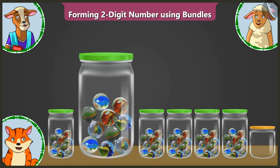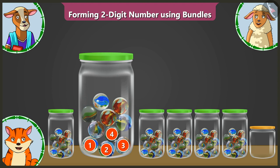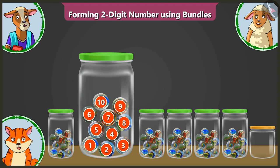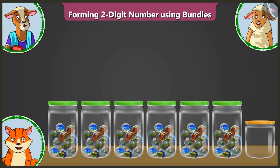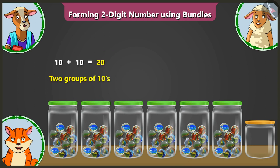Billy, you count the marbles in the second jar. In the second jar, there are 1, 2, 3, 4, 5, 6, 7, 8, 9 and 10 marbles. Yes, that is correct. So there are 10 and 10 — 20 — two groups of 10s.